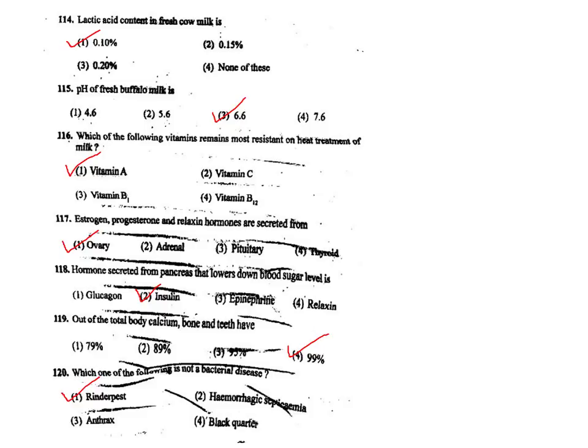Q118. The hormone secreted from the pancreas that lowers blood sugar level is insulin. Insulin reduces blood glucose levels.